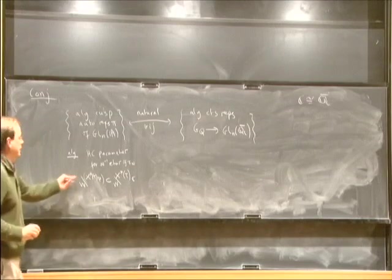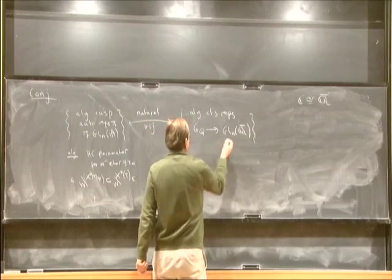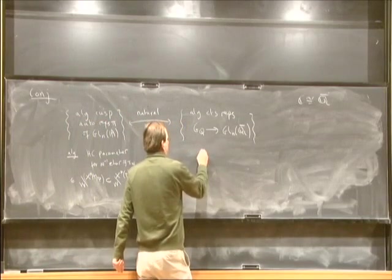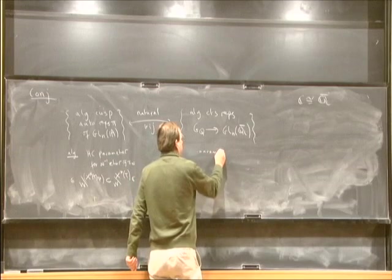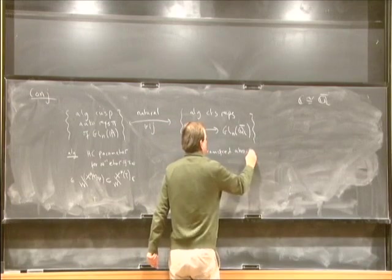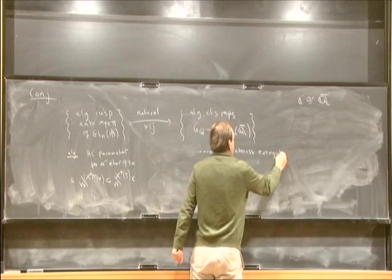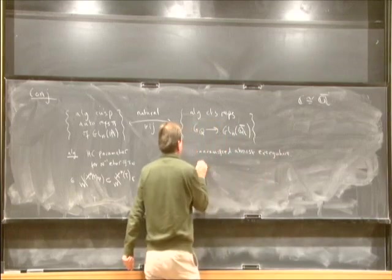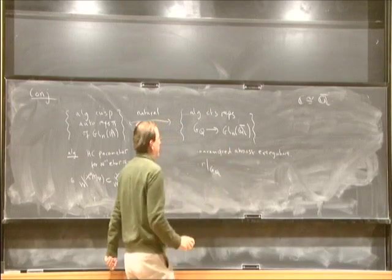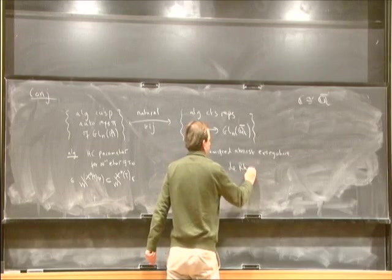So it's some integrality assumption on the infinitesimal character of pi-infinity. On the Galois representation side, 'algebraic' means unramified almost everywhere — all but finitely many primes — and it means that when I restrict to the decomposition group at the prime L, if I'm looking at L-adic representations, this should be de Rham in the sense of Fontaine.